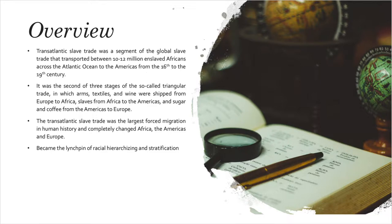The transatlantic slave trade was a segment of the global slave trade that transported between 10 to 12 million enslaved Africans across the Atlantic Ocean to the Americas from the 16th to the 19th century. It was the second of three stages of the so-called triangular trade, in which arms, textiles and wine were shipped from Europe to Africa, slaves from Africa to the Americas, and sugar and coffee from the Americas to Europe. It was the largest forced migration in human history and became the linchpin of racial hierarchizing and stratification.